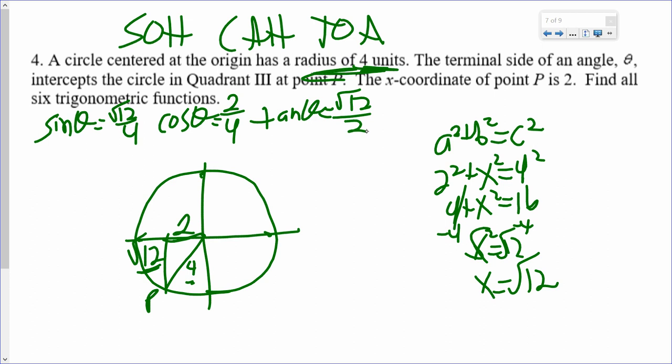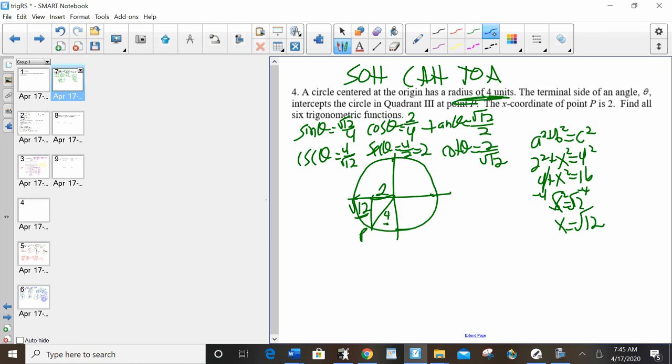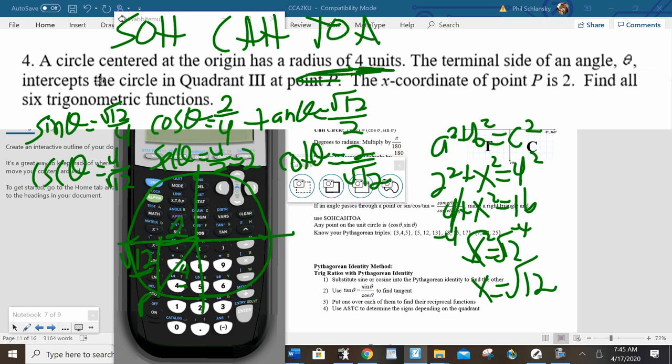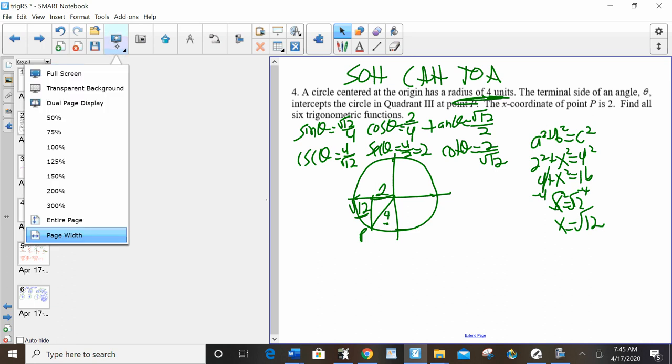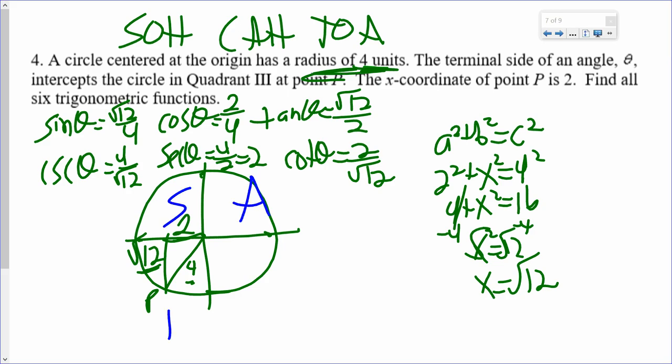So now the reciprocal functions, the reciprocal of sine is C, so I flip that. The reciprocal of cosine is C, so I flip that, and 4 over 2 is 2. And I flip tan, and I get cotan is 2 over rad 12. Now that's great and all, but 4 of them are wrong. All students take calculus in quadrant 3, tangent and cotangent are positive. Everything else is negative.